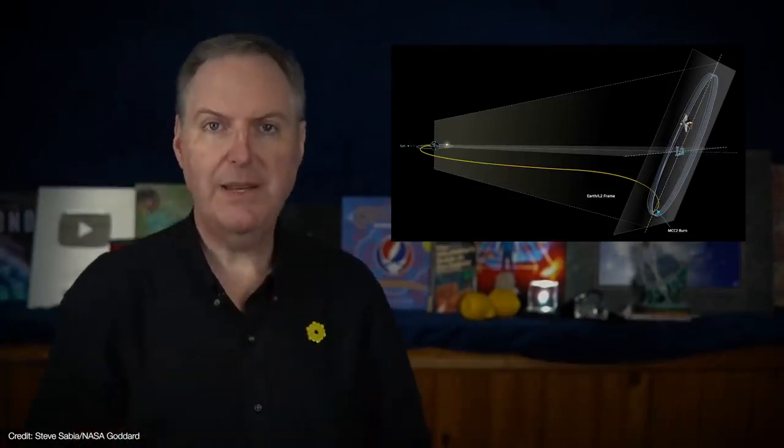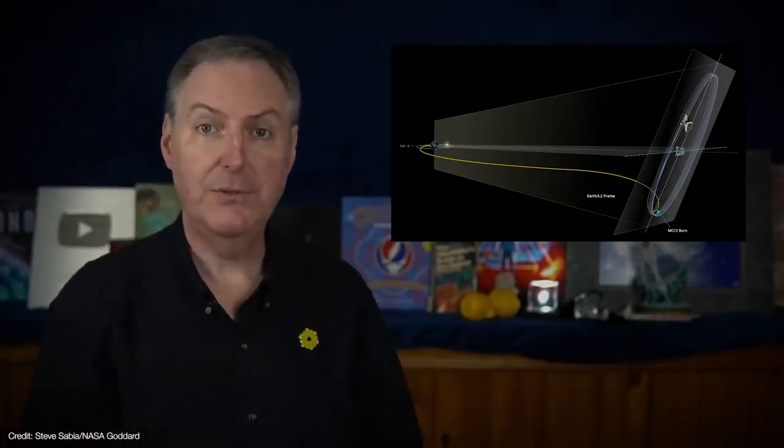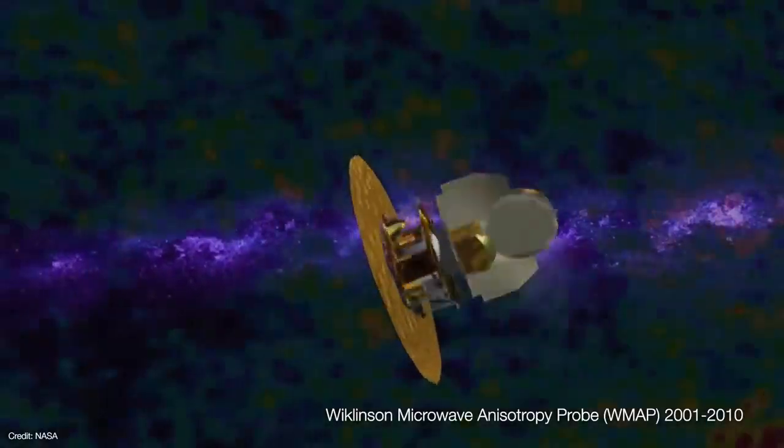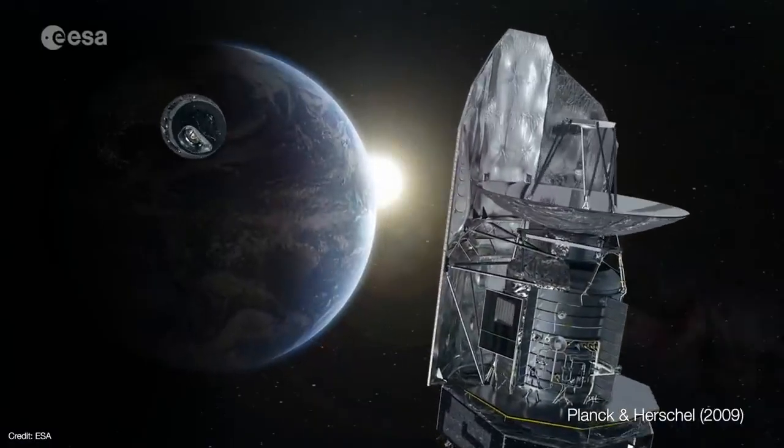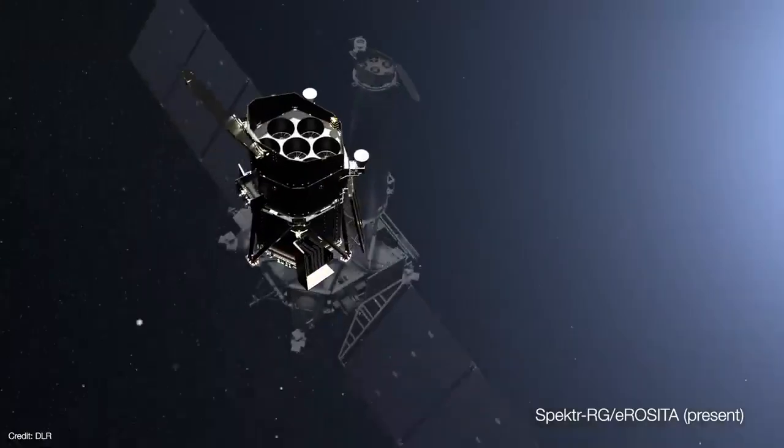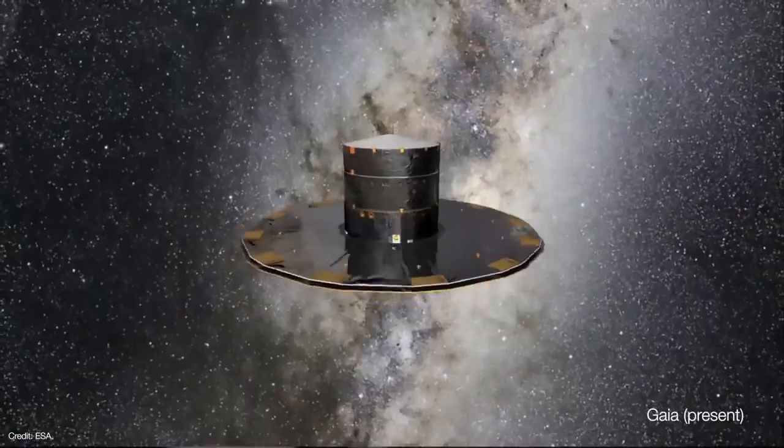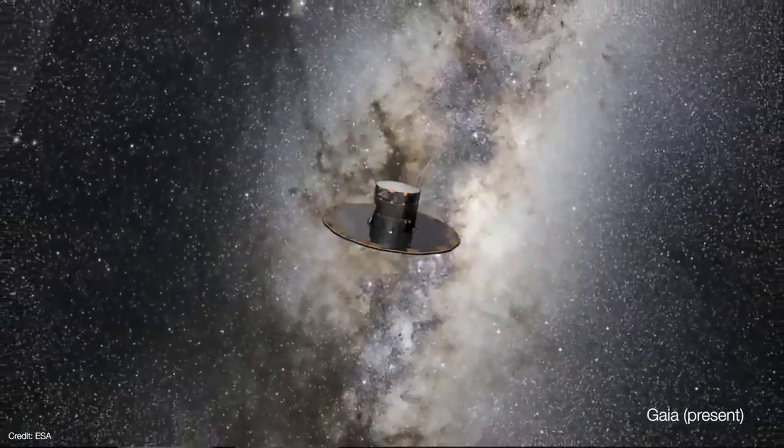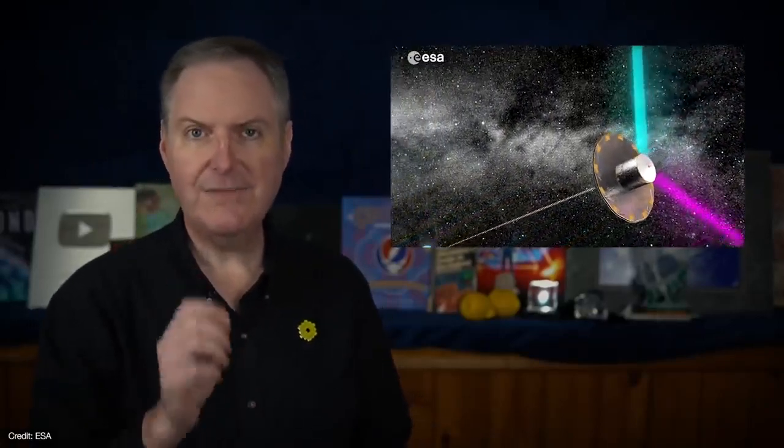In fact, there are many spacecraft that have orbited L2, such as NASA's WMAP satellite and ESA's Planck and Herschel telescopes. And Russia's Spectre-RG and ESA's Gaia spacecraft are both orbiting there today. In fact, Gaia is featured in an episode of Space the New Frontier, which is a series on MagellanTV, who I'd like to thank for sponsoring today's video.